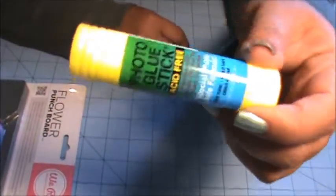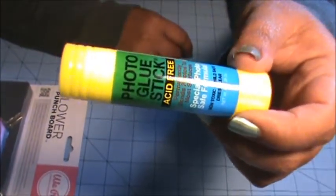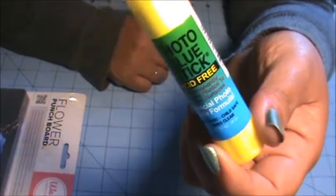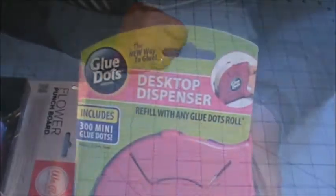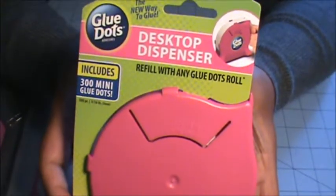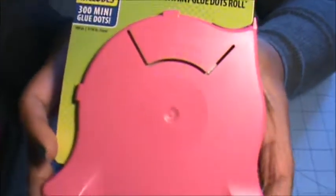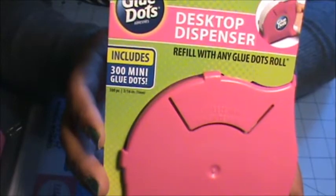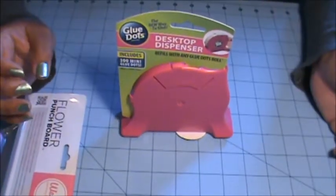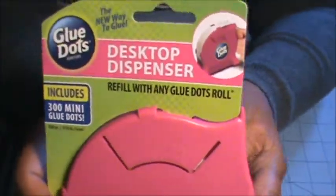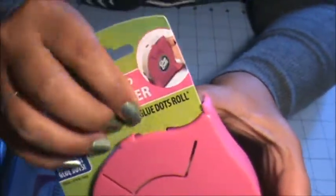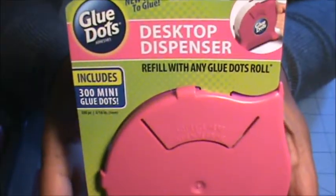First in the bag was another one of these photo glue sticks, so I'm glad to have a backup since I was going to give you guys one of mine, so now I have two. We also received this desktop glue dot dispenser. It's already filled with 300 mini glue dots and it just stands there on your desk like this. That's really cool. I was actually running out of my glue dots, so I'm glad to have this and my other one that I got in my other class.